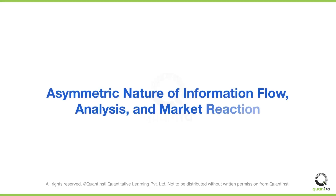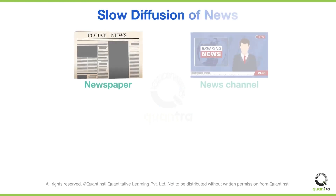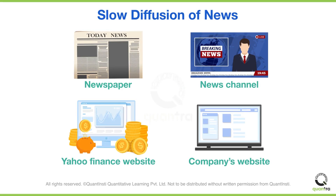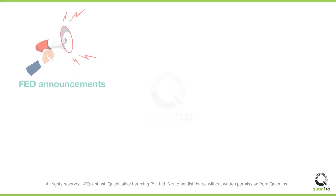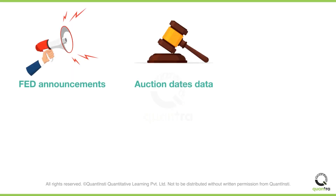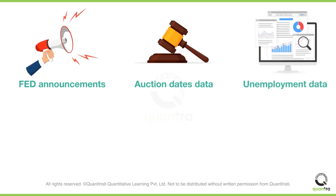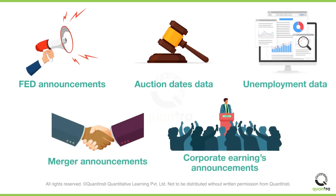Another cause is the asymmetric nature of the information flow, analysis, and market reaction. Everyone analyzes the news and takes action at a different pace, and this results in momentum, which can be seen on scheduled events or during news releases. For example, Fed meetings, auction dates, release of economic data such as unemployment data, and corporate earnings announcements.